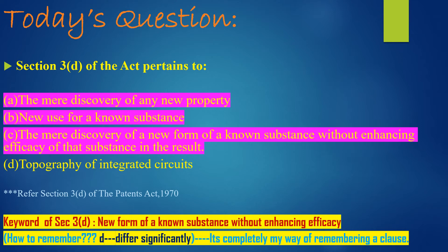So how to remember this? As we know there are so many clauses for Section 3 and we may get confused by the clause alphabets. So here is how to remember: D — because this is Section 3D — so D stands for 'differ significantly.' If you can remember this keyword, then you can recall the whole section.